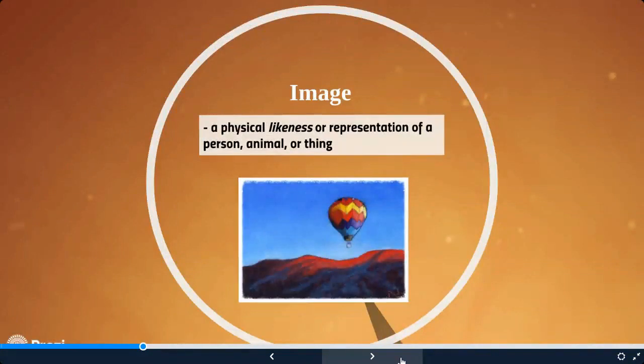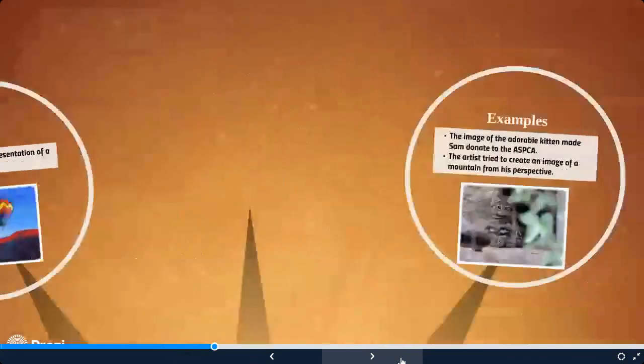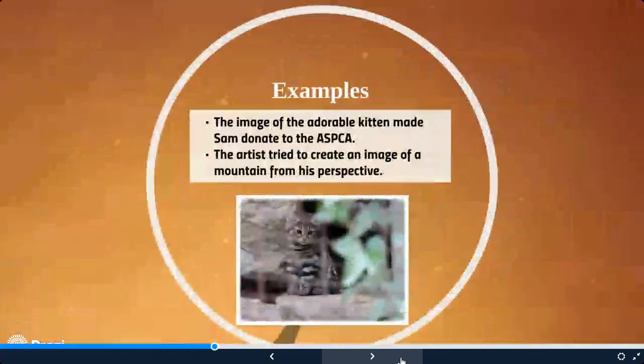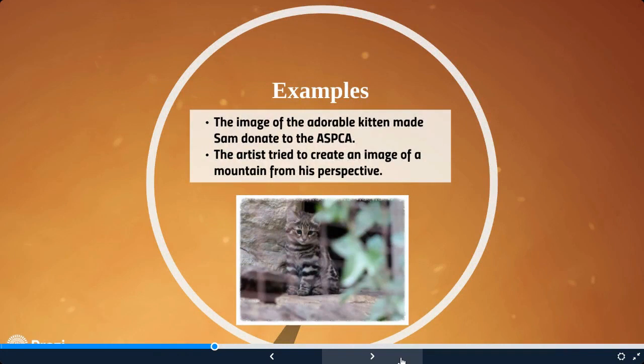An image is a physical likeness or representation of a person, animal, or thing. In this example, there is an image of an adorable kitten. An artist also tries to create an image of a mountain from their perspective.